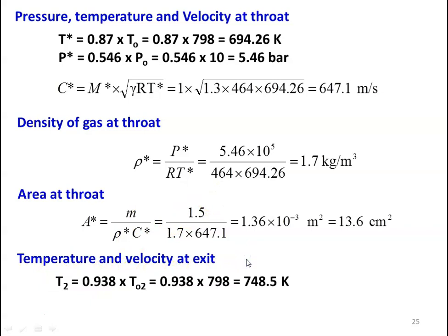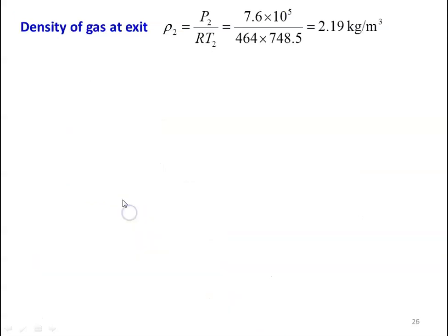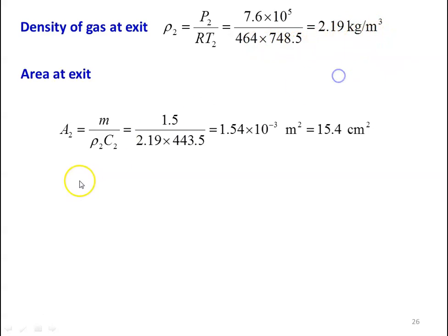Temperature and velocity at the exit section: T2 equal to 0.938 into TO2 which is 0.938 into 798 equal to 748.5 Kelvin, and C2 equal to M2 into square root of gamma R T2, which is 0.66 into square root of 1.3 into 464 into 748.5, giving velocity equal to 443.5 meters per second. Density of gas at exit: rho2 equal to P2 by R T2, which is 7.6 into 10 power 5 divided by 464 into 748.5 equal to 2.19 kilograms per cubic meter. Area at exit A2 equal to M divided by rho2 C2, which is 1.5 divided by 2.19 into 443.5 equal to 1.54 into 10 power minus 3 meter square, which is 15.4 centimeter square.